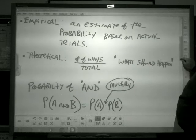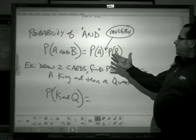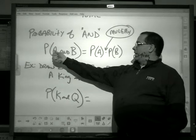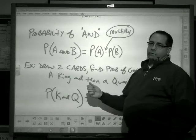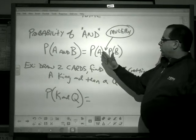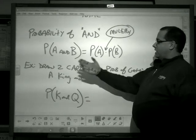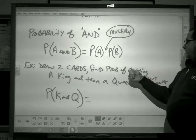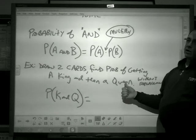We have a couple scenarios with probability. We have the probability of event A and then event B happening. When we have two independent events happening one right after the other, we will multiply those probabilities together. For example, I draw two cards. I find the probability of getting a king on the first card and then a queen on the second card.